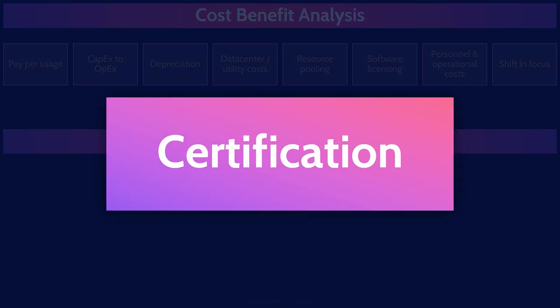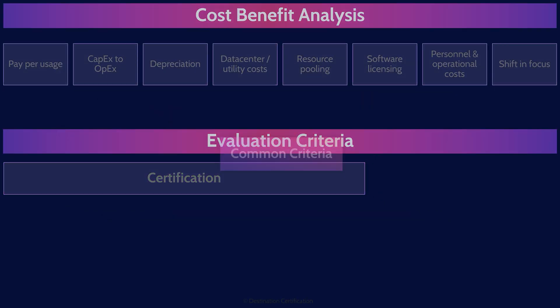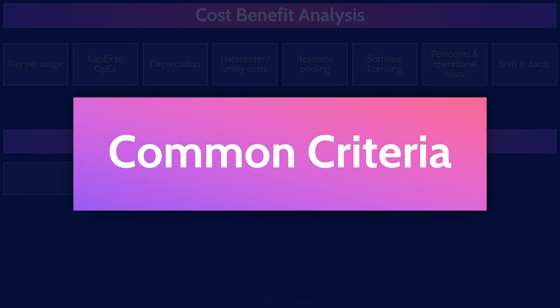There are two major steps involved in evaluation criteria. The first is certification, which is the comprehensive technical analysis of a solution or product to ensure it meets our needs — in other words, where the independent testing lab evaluates a product and gives it a rating. Let's start with the most commonly used evaluation criteria in the world: the aptly named Common Criteria for Information Technology Security Evaluation. Everyone just calls it Common Criteria, and it can be used to evaluate all sorts of different devices.